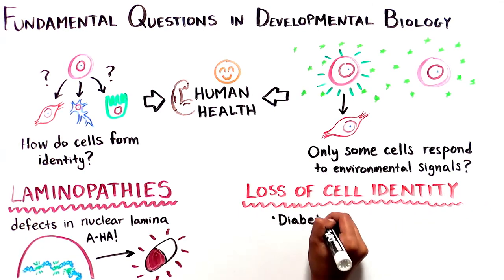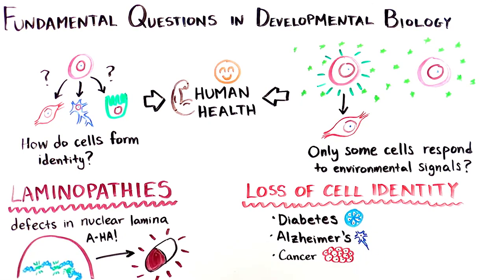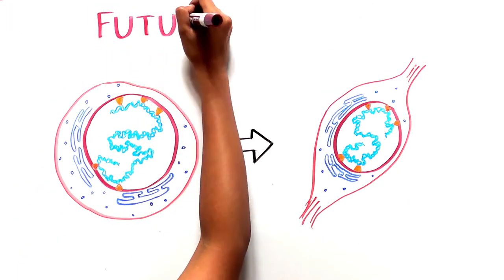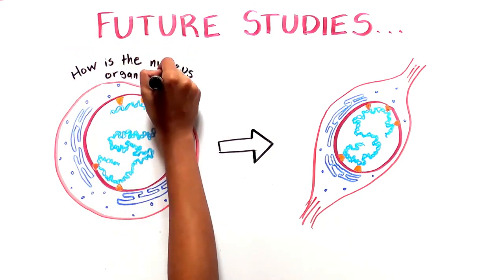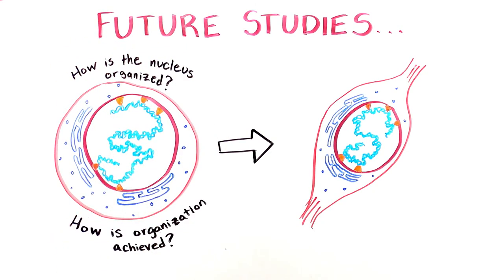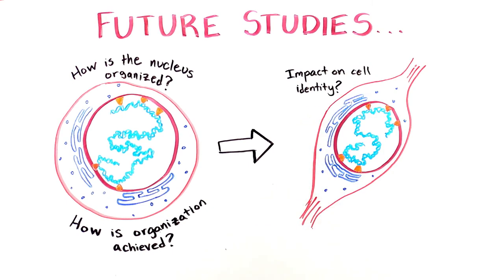Additionally, there are many other types of diseases that occur because of a loss of cellular identity — such as diabetes, Alzheimer's, and cancer — that can also benefit from insight into how cells establish identity. The group is excited to undertake many studies exploring how the nucleus is organized, how this organization is achieved, and how this organization impacts cell identity.